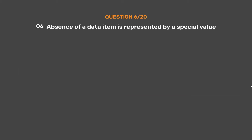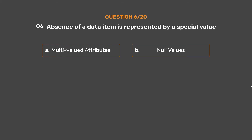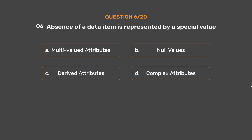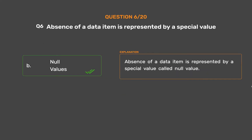Question number 6. Absence of a data item is represented by a special value. Option A: Multi-valued attributes. Option B: Null values. Option C: Derived attributes. Option D: Complex attributes. The correct answer is Option B: Null values. Absence of a data item is represented by a special value called a Null value.